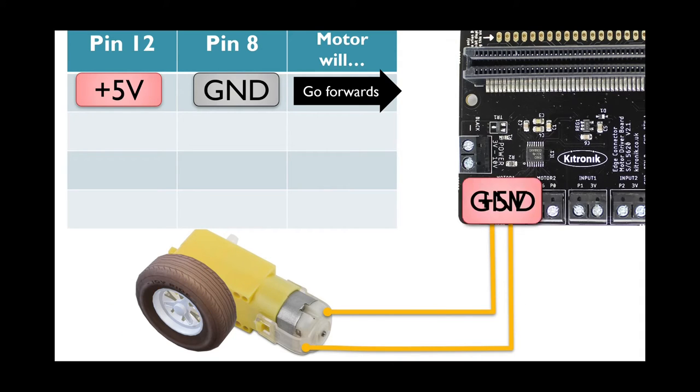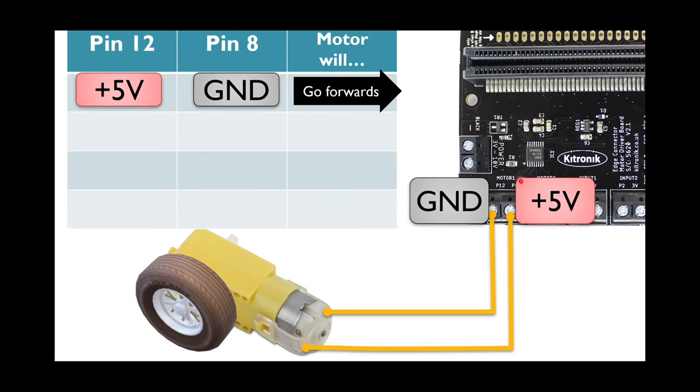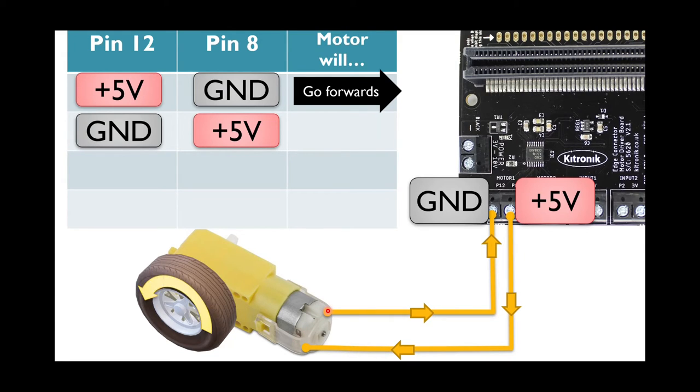But then, what if I had it the other way around? Well, you can't really see pin 8 there. That's OK. Suppose that pin 12 was at ground and pin 8 was at positive 5 volts. Well then, electricity flows from positive to negative. So it will go through here. There is still current, but the current is in the other direction. So the motor will spin the other way. It will go backwards.